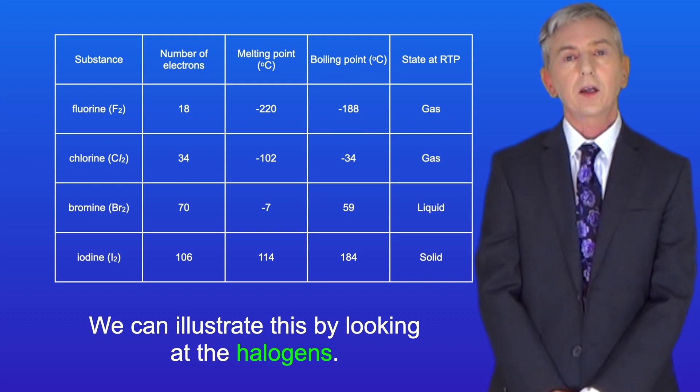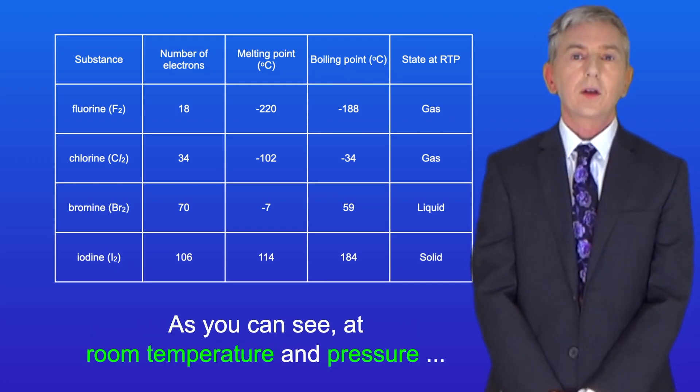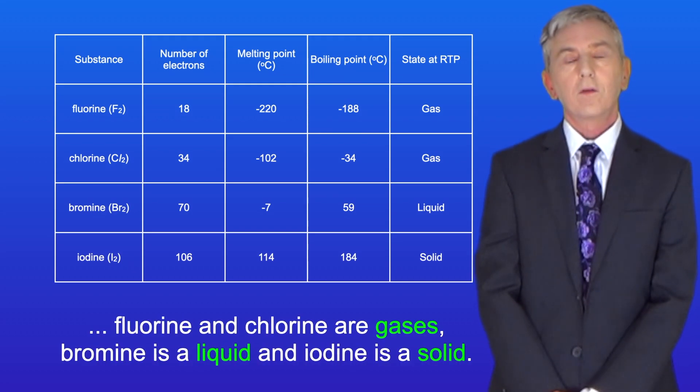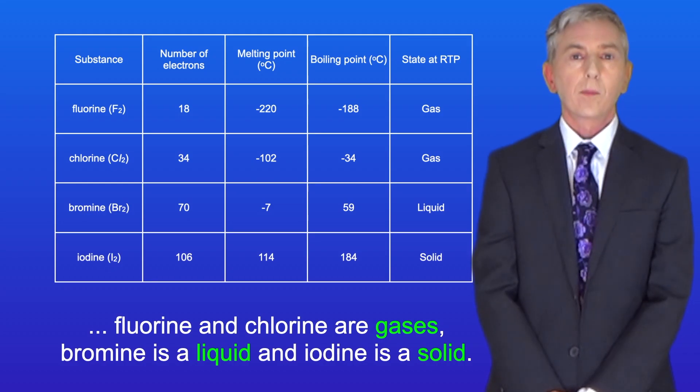Now we can illustrate this by looking at the halogens. As you can see at room temperature and pressure, fluorine and chlorine are gases, bromine is a liquid and iodine is a solid.